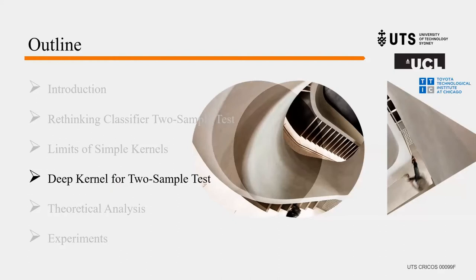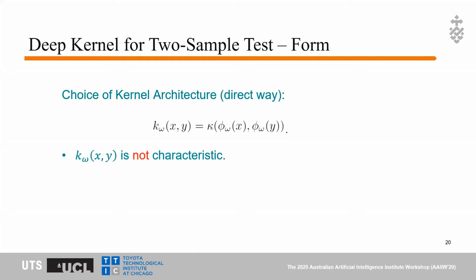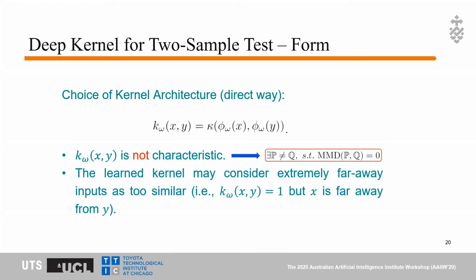To design a deep kernel for the two-sample test, a simple approach is to use a deep network as a feature extractor and pass those features into kappa, where kappa is a Gaussian kernel. However, we find that if we design a deep kernel this way, the kernel K_omega is not characteristic — meaning we can find P ≠ Q such that MMD(P,Q) equals zero, which is not a desirable property. Another issue is that this kernel may consider extremely far-away inputs as too similar, i.e., K(x,y) equals zero even when x is far from y.